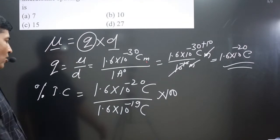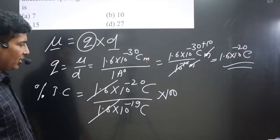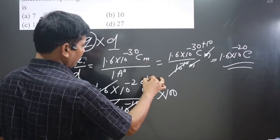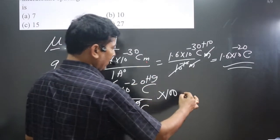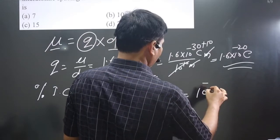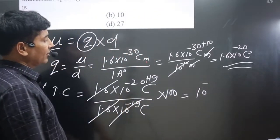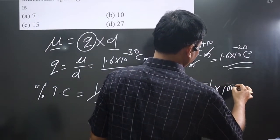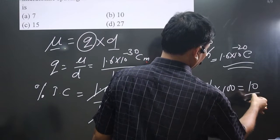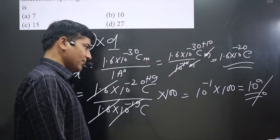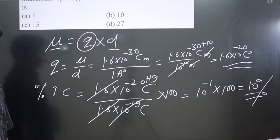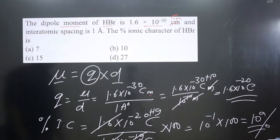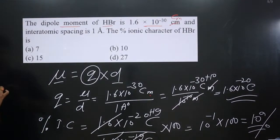Simplifying: 1.6 and 1.6 cancel out. 10 to the power minus 19 moves to the numerator, becoming plus 19. So we get 10 to the power of minus 20 plus 19, which is 10 to the power minus 1. Then 10 to the power minus 1 multiplied by 100 gives 10. So the answer is 10 percent. Checking the options, option B is correct.